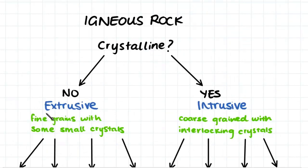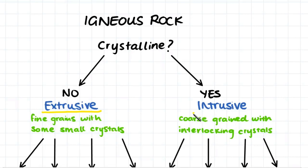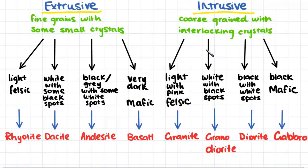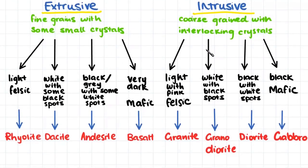Firstly, we should ask ourselves: is the rock crystalline? If it's not crystalline and the majority of the grains are fine with some small crystals, we say that it is extrusive. If it is a crystalline rock with a lot of coarse grains that are all interlocking, we say that it is intrusive. Once we have decided whether the rock is intrusive or extrusive, we then look at the color of the rock.